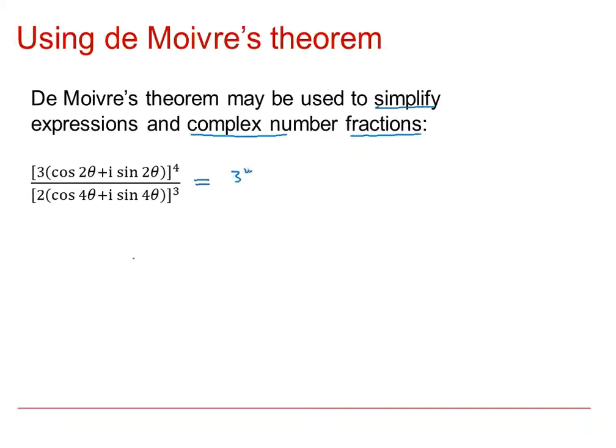So we get 3 to the power of 4 cos 4 lots of 2 theta plus i sine 4 lots of 2 theta.